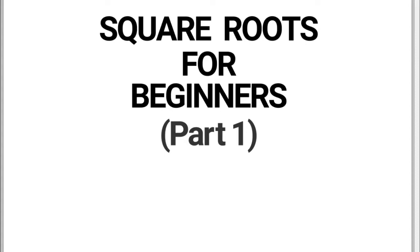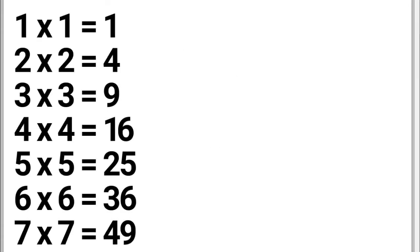To learn basic square roots, you should first memorize these basic multiplications. 1 times 1 is 1. 2 times 2 is 4. 3 times 3 is 9. 4 times 4 is 16. 5 times 5 is 25. 6 times 6 is 36. 7 times 7 is 49.